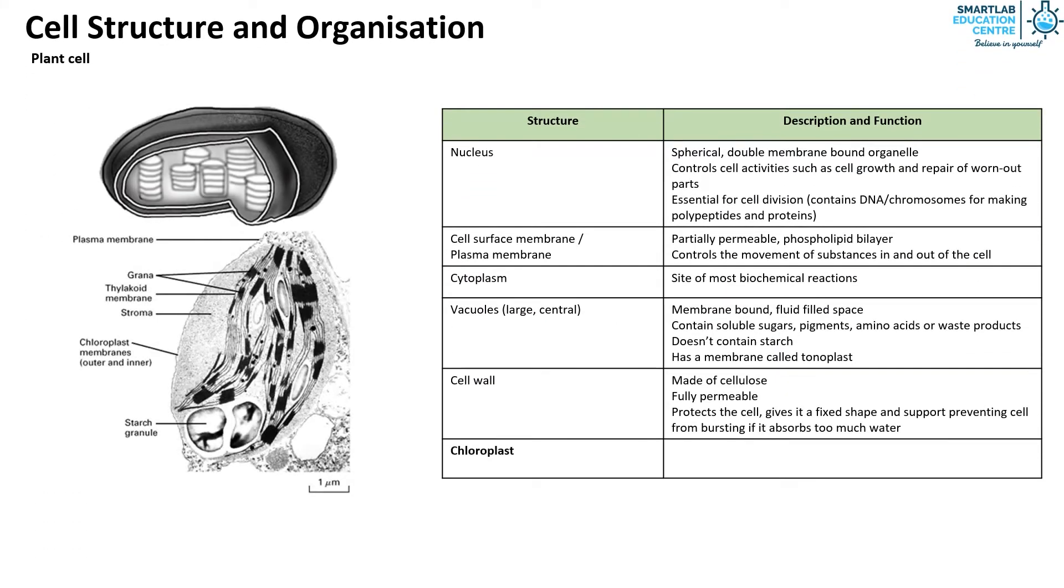Finally we have the chloroplast. It is tiny disc-like structure and contains chlorophyll which is the site of photosynthesis.